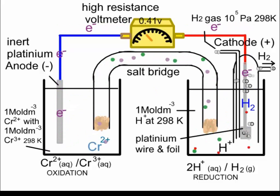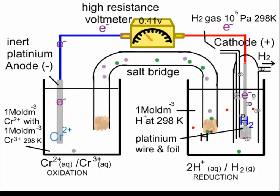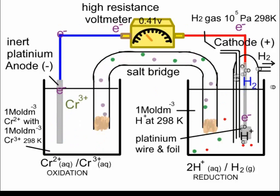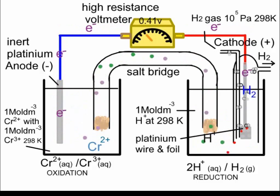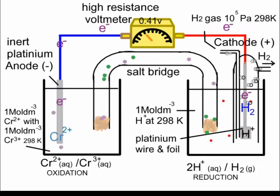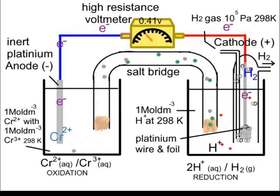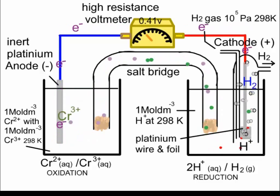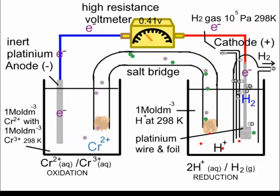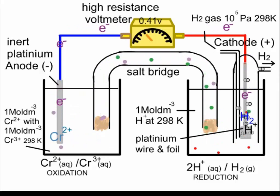In the other scenario, where the half cell coupled to the standard hydrogen half cell is the one that undergoes reduction, it has a larger reduction potential than the hydrogen half cell and will have a positive E-theta value. In this case, the voltage will directly give the E-theta value or reduction potential for that other half cell.